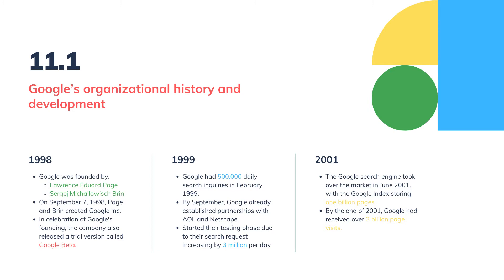In celebration of Google's founding, the company released a trial version called Google Beta. By their first couple of months, the organization with five employees moved into their first office in Palo Alto, Silicon Valley. In 1999, Google had eight employees and 500,000 daily search inquiries in February. By September of the same year, Google had already established partnerships with AOL and Netscape, starting their testing phase as search requests increased to 3 million per day.